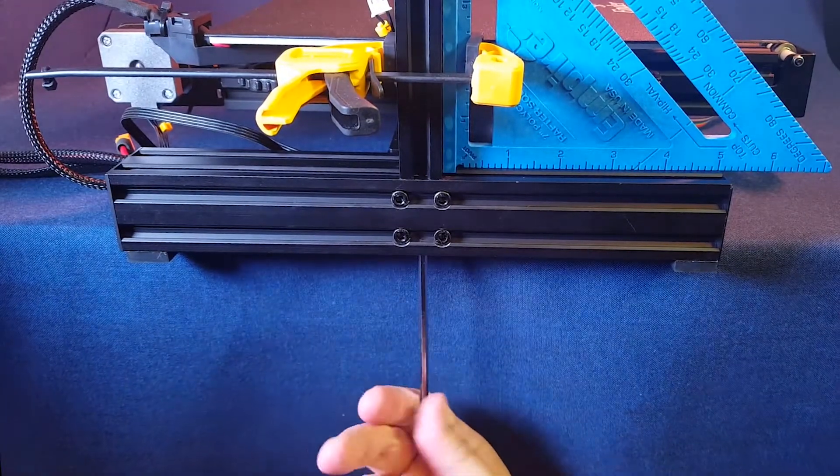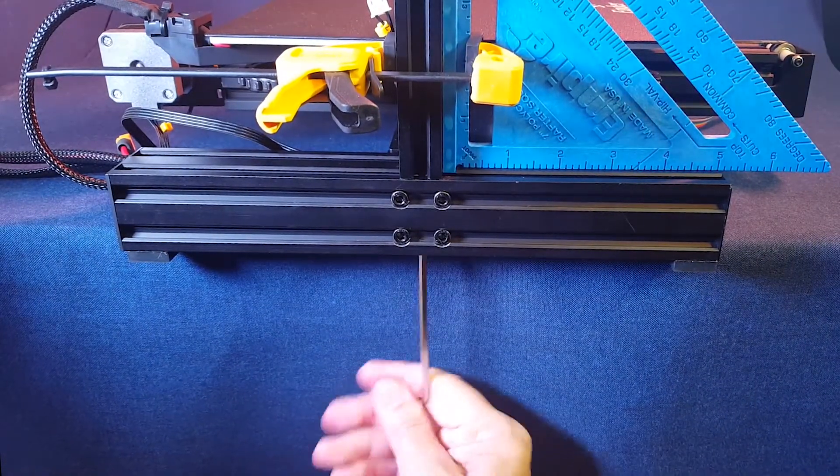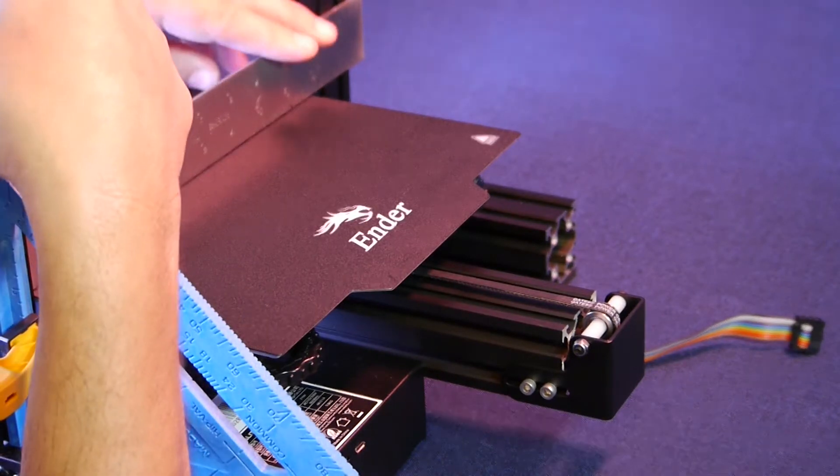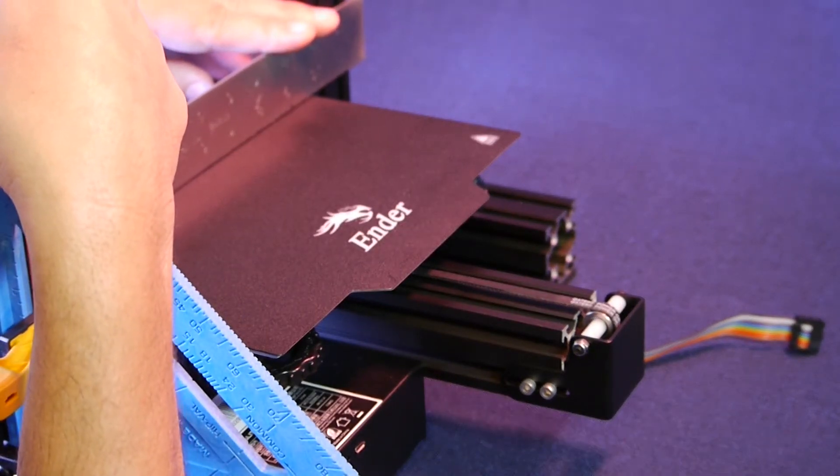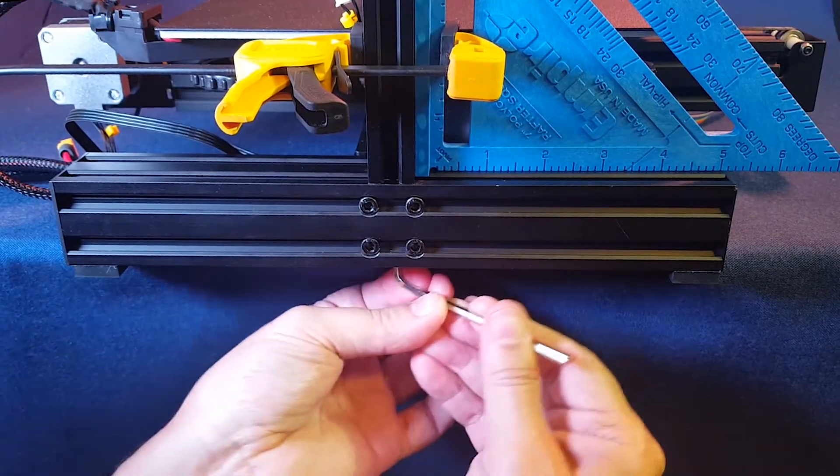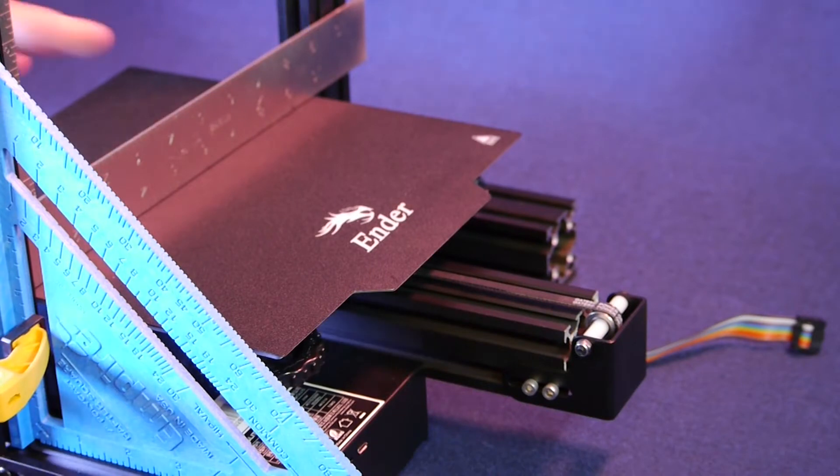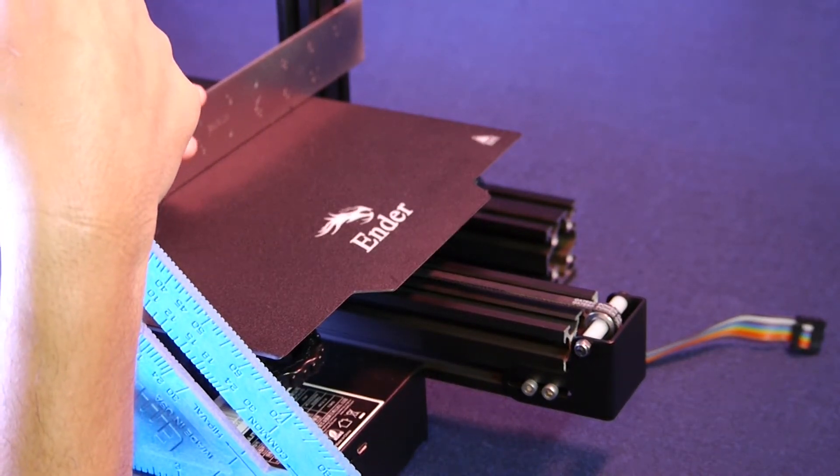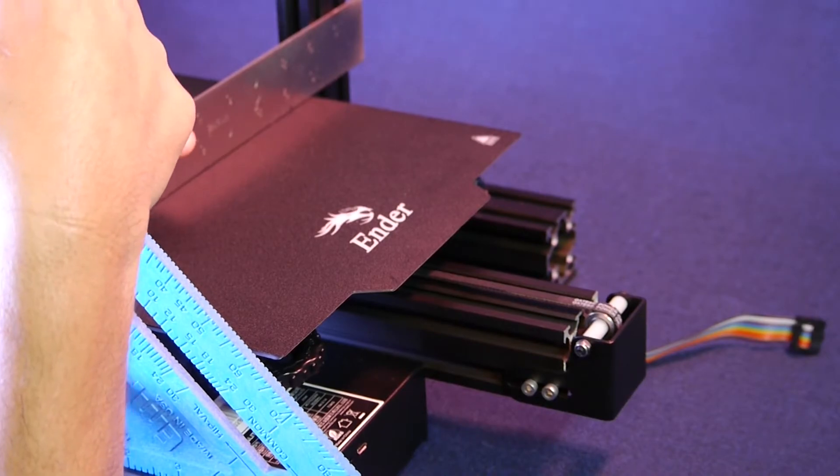Now, we will have to balance out how much we tighten each of the screws so that, at the end of the process, the 2040 aluminum extrusion will be perfectly tight and also at a 90 degree in relation to the build plate. Finally, the 2040 aluminum extrusion is perfectly aligned and both screws are pretty tight.